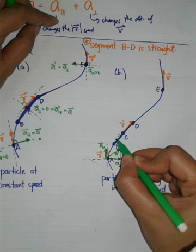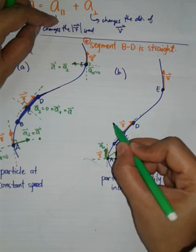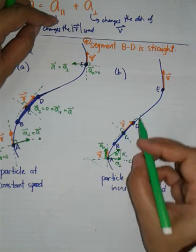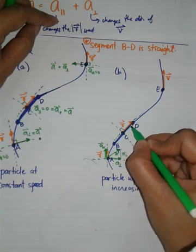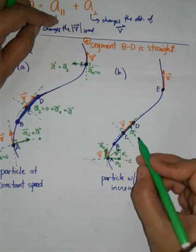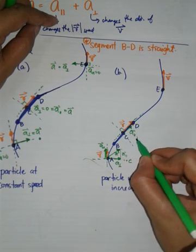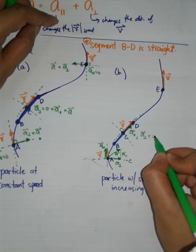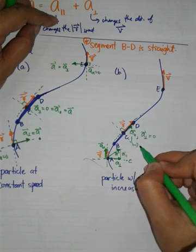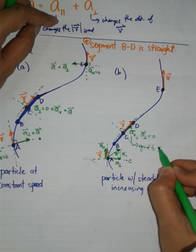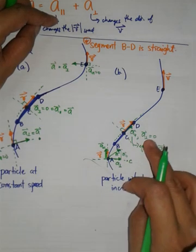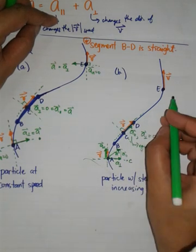Let's go to C. Extrapolate. Extend this as if it's one axis. That's 90 degrees. Speeding up. So again, A parallel is parallel to V. But since this is a straight line, A perpendicular is 0. So in this case, A parallel equals the whole acceleration vector itself because A perpendicular is absent.